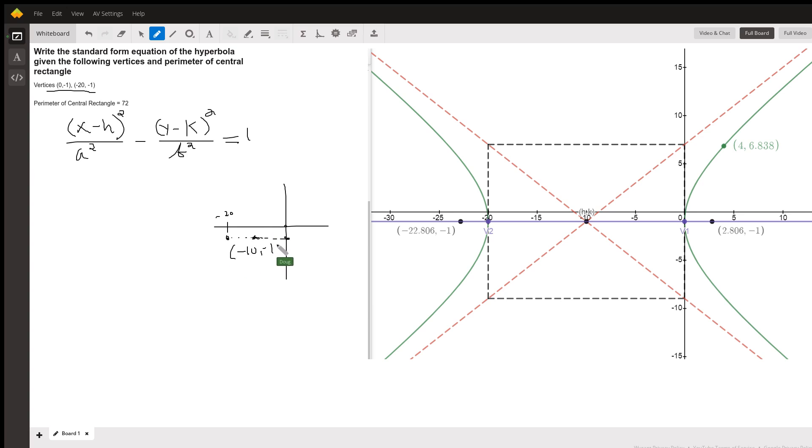And that allows us to fill in the h and the k in this general form for the equation of a hyperbola that opens left and right. So we can start with x minus negative 10, which is x plus 10, the quantity squared.